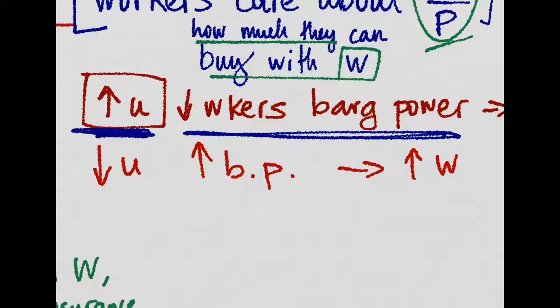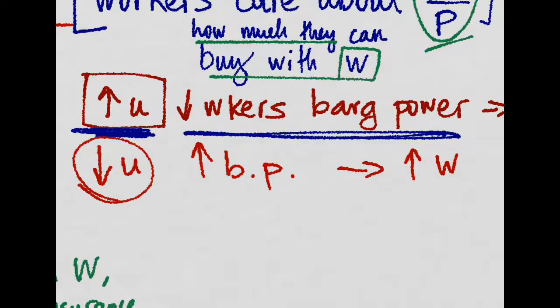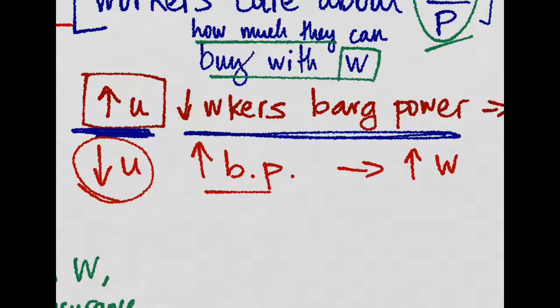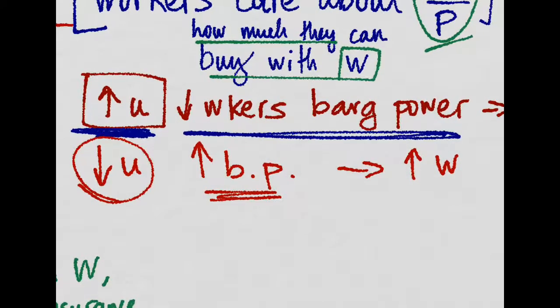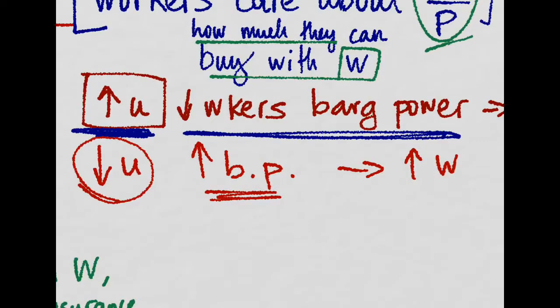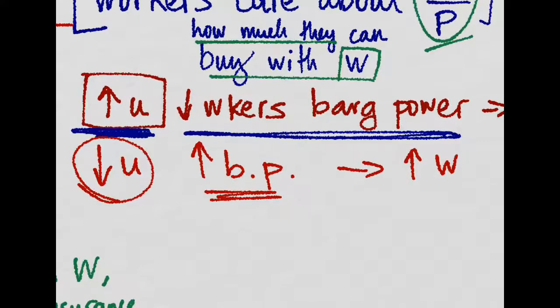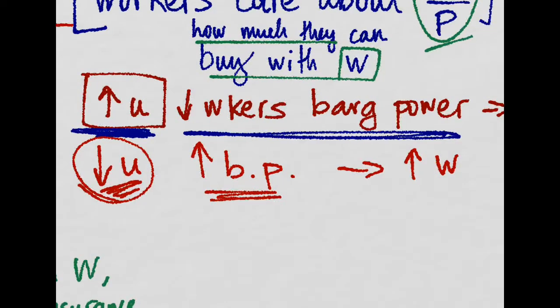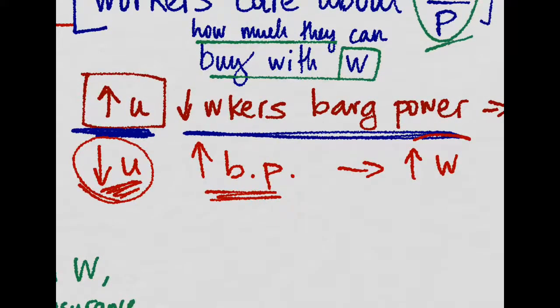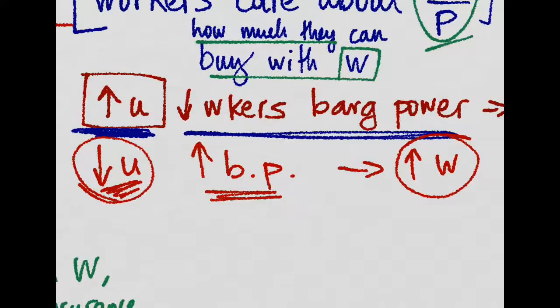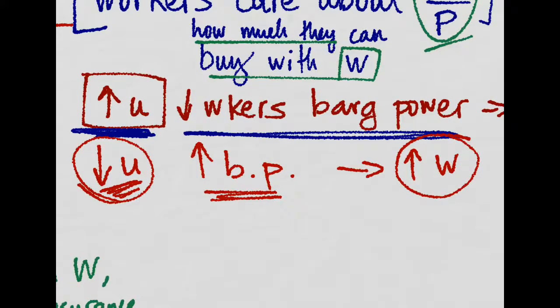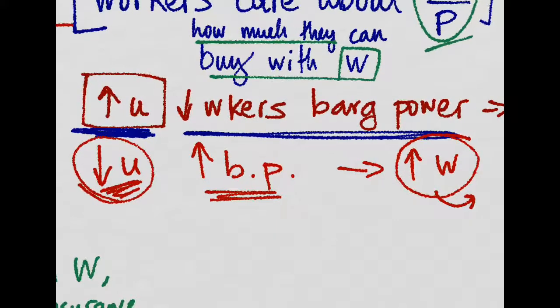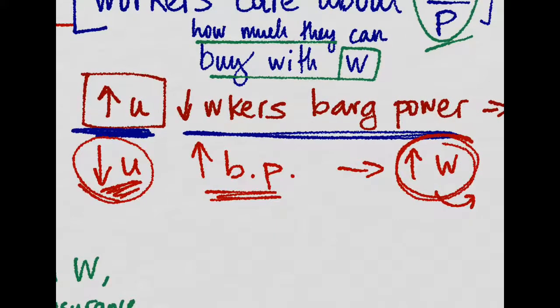Imagine the opposite case, that there is very low unemployment rate in the economy. In this case, workers have a lot of bargaining power, since firms know that there are a lot of jobs available out there. And if they don't pay enough to their employees, these workers will decide to go away to another company. So firms accept to pay higher wages.